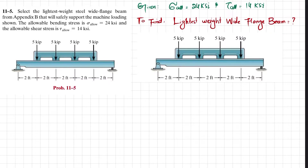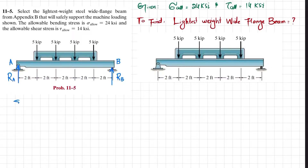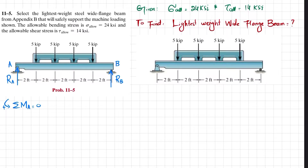Let's start with the solution. Our first step is to remove the supports. There will be a reaction force at point A, which we call RA, and a reaction force at point B, called RB. To find them, we apply the equilibrium conditions. The first equilibrium condition is that the sum of all moments about point A equals zero, taking counterclockwise moments as positive.